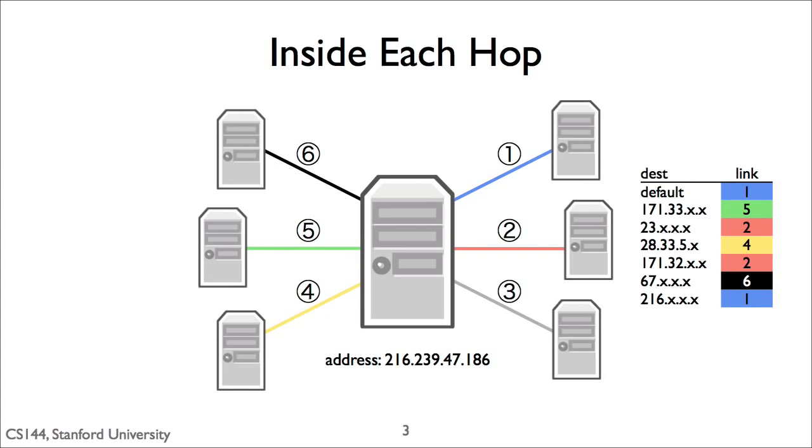How does a router make this decision? It does so through something called a forwarding table, shown here on the right. A forwarding table consists of a set of partial IP addresses. The X's show that the addresses are partial. The X's represent wildcards.